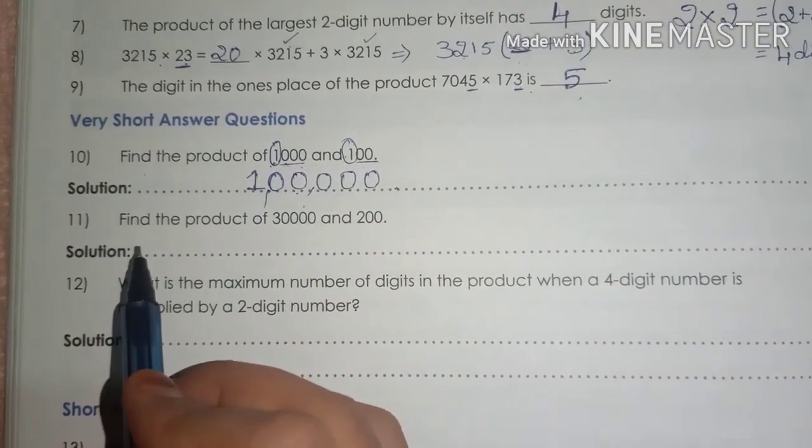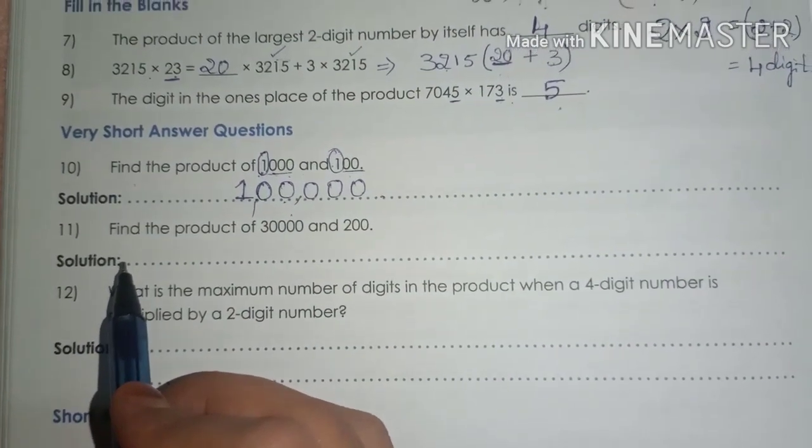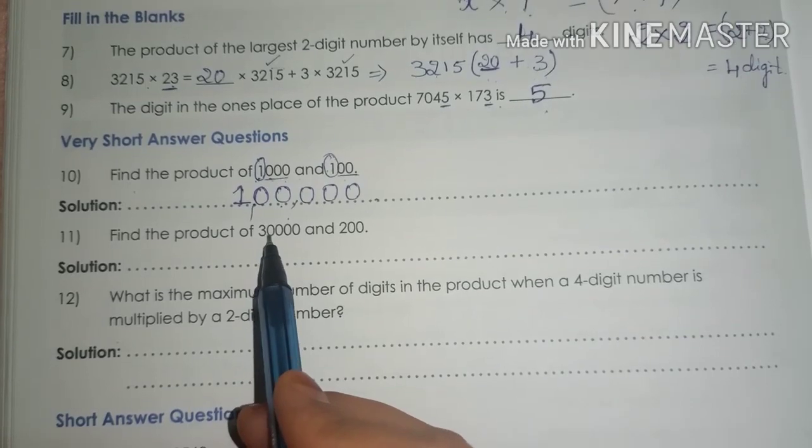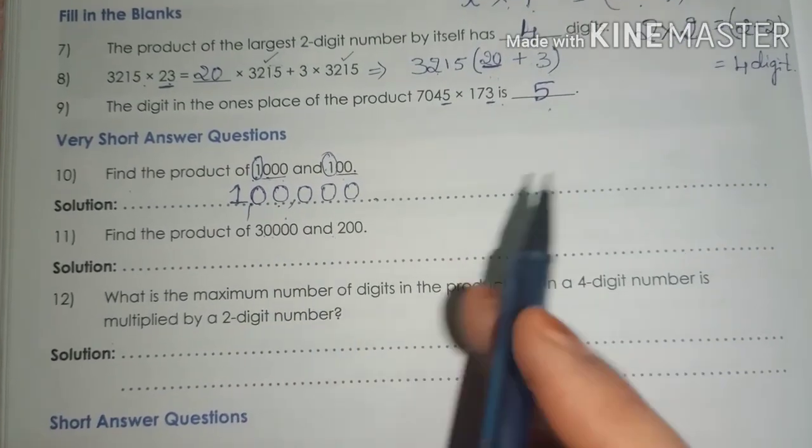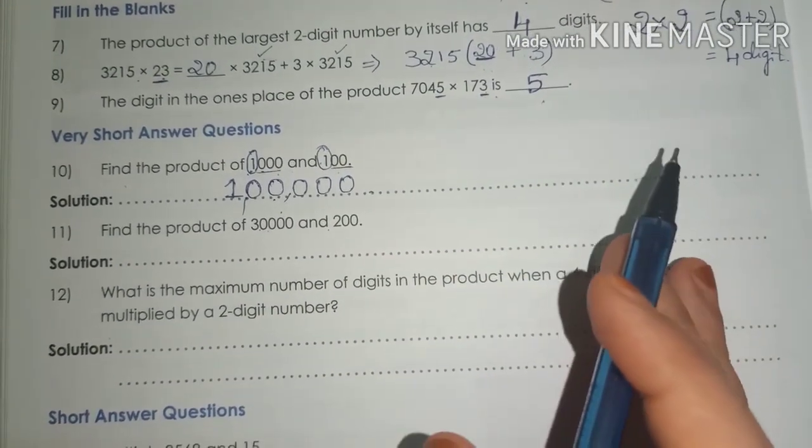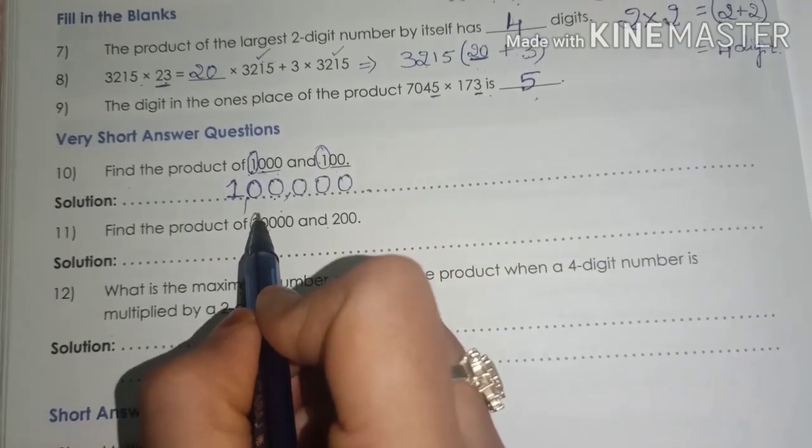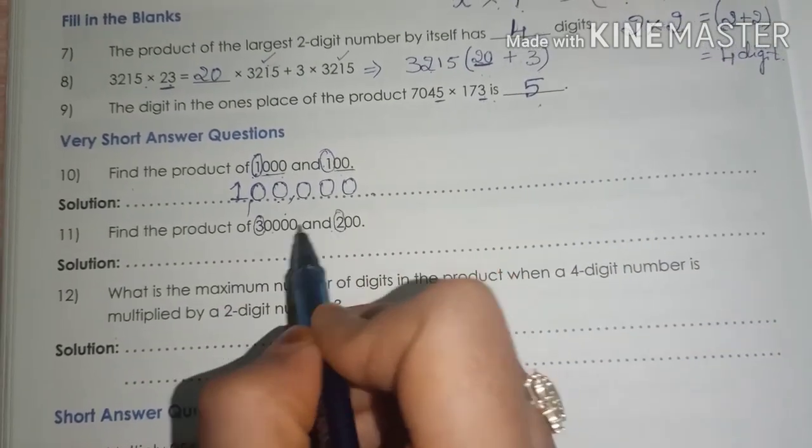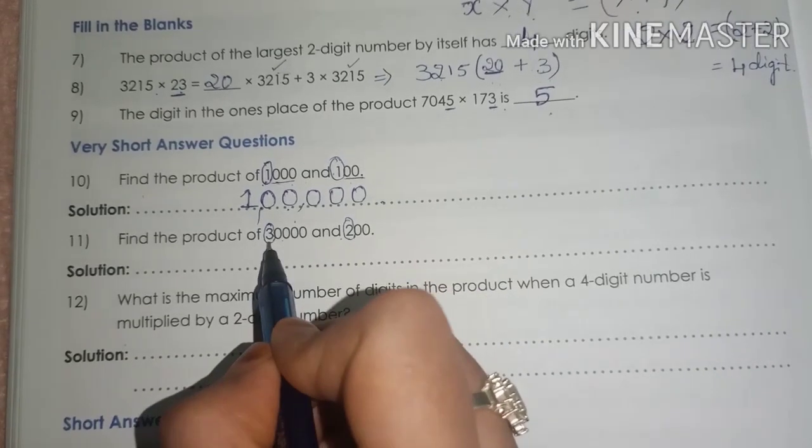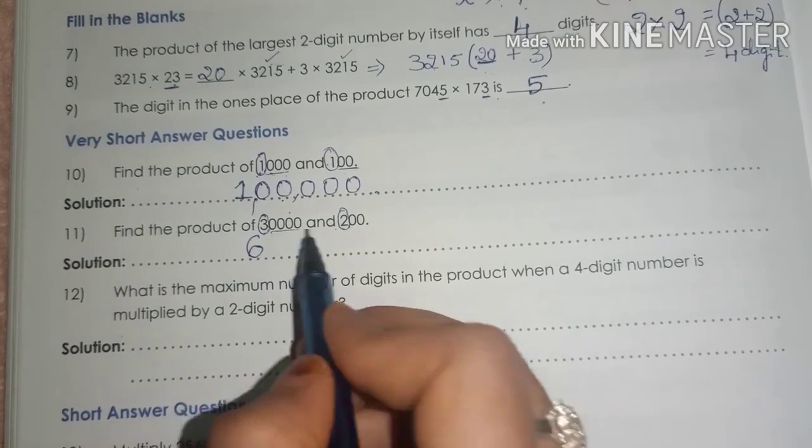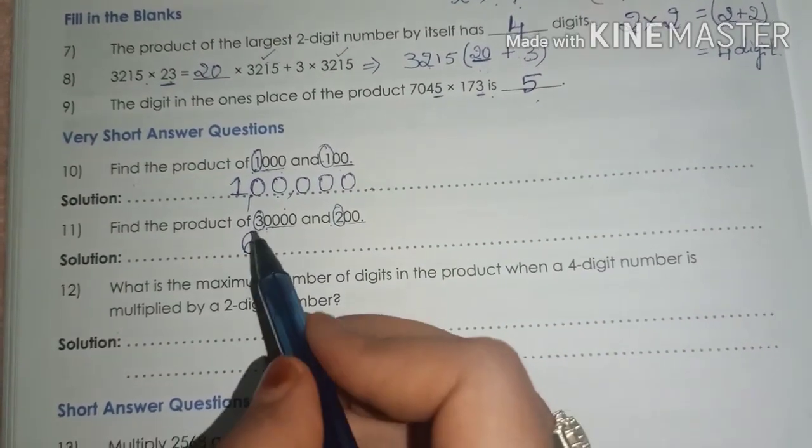Similar to this question, come to question number 11. In question number 11, they are asking find the product of 30,000 and 200. Follow the same procedure. Follow the same steps. First, multiply the highest place value number. That is 3 and 2. 3, two's are 6. Write down 6.